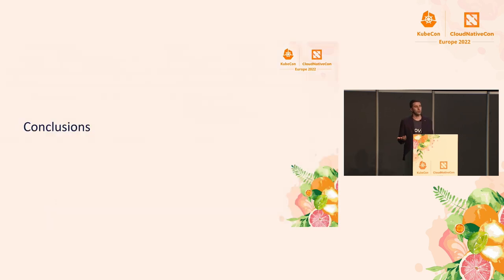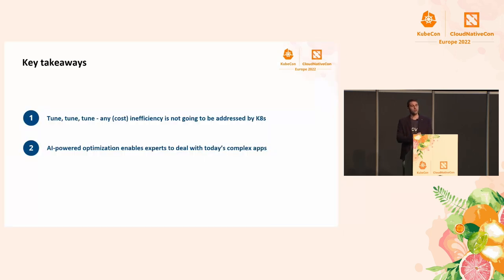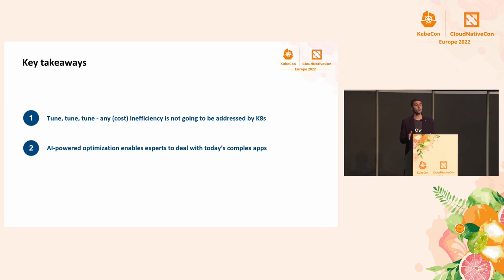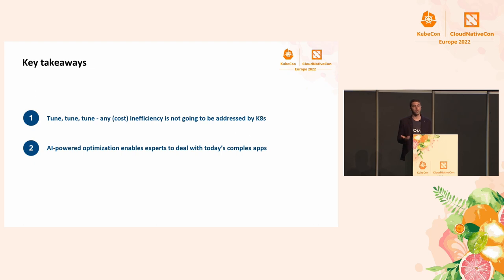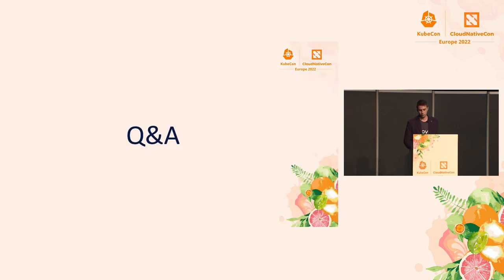There are many interesting configurations that we found in our study, but I think it's time to conclude with a few takeaways. First: tune, tune, tune. Any inefficiency is not going to be addressed by your Kubernetes cluster — if you don't think about how to optimize your platform, nobody else will. The second takeaway is that today's applications are too complex; you simply don't have time to optimize everything. AI-powered optimization works and can be the solution to your optimization needs. Thank you.